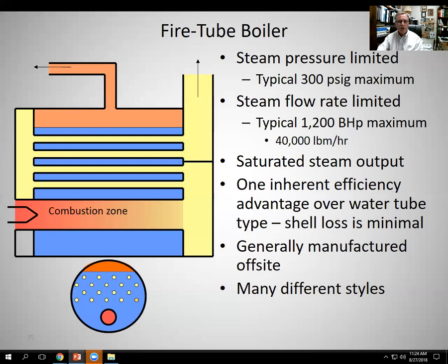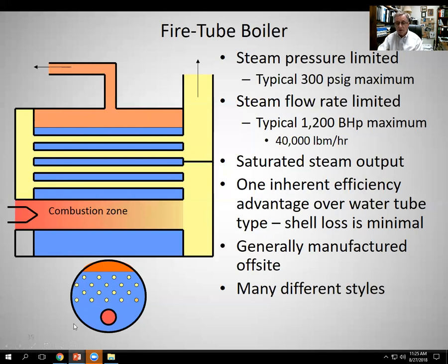So if you had a 100 horsepower boiler, that would be 3,450 pounds per hour of steam generation as its maximum nominal capacity. We'll talk more about that in class. Again, saturated steam output. There is an inherent efficiency advantage of fire tube boilers over water tube boilers.